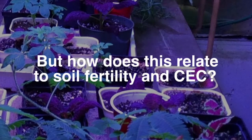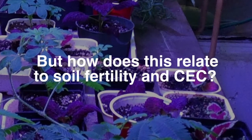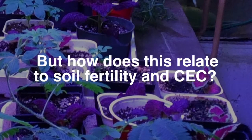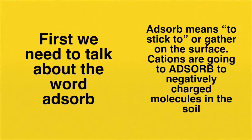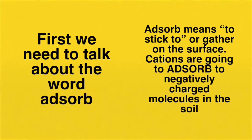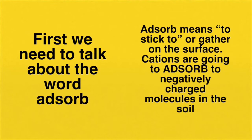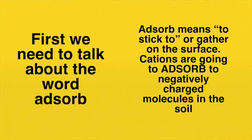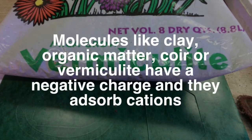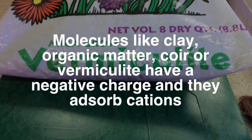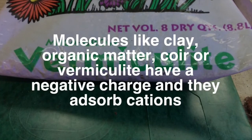Most growers know that those cations are important to plant growth as nutrients, but how does the cation exchange capacity relate to soil fertility and determine which nutrients are available to plants and which ones aren't? First, we need to talk about the word 'adsorb' — A-D-S-O-R-B. Adsorb means to stick to or gather on the surface. This is important because cations are going to adsorb to the negatively charged molecules found in the soil, like clay or organic matter. Indoors, vermiculite or coir have a negative charge and will have these cations stick to them, holding them in place.